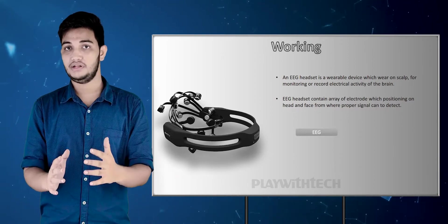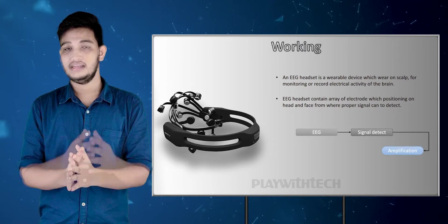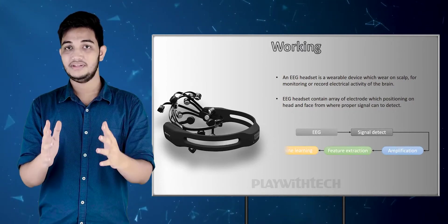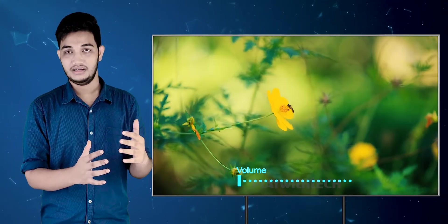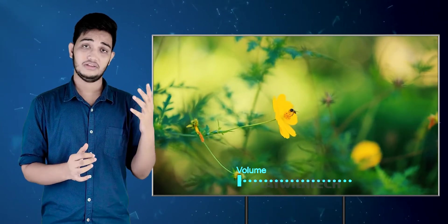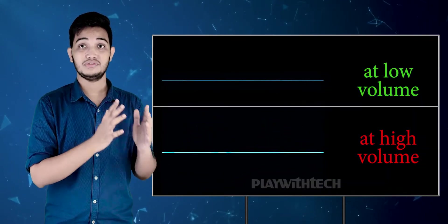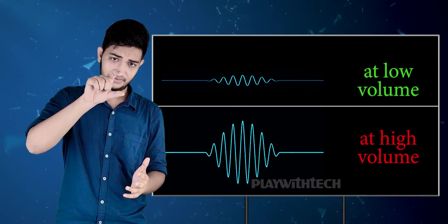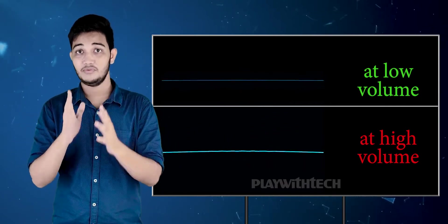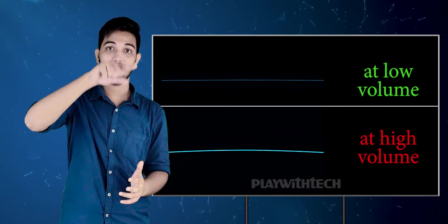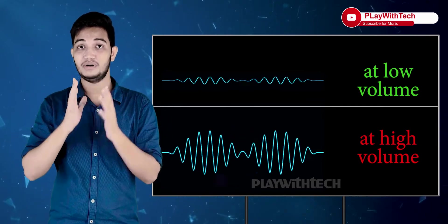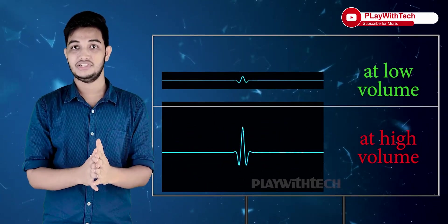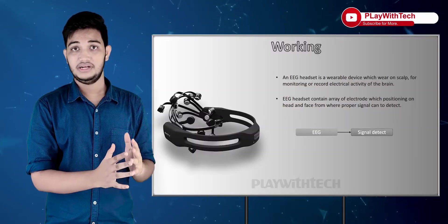Because the signal is weak, you need to amplify it. To understand amplification, take a basic example: when you watch TV and control the volume — at low volume the sound is very soft. As you increase the volume, the amplitude of the wave increases. When volume is low, the amplitude is low; when volume is higher, the amplitude is higher. This increase in amplitude is called amplification. After amplification, the same process: digitize, process, and send to output.